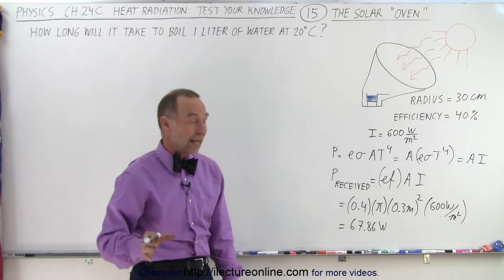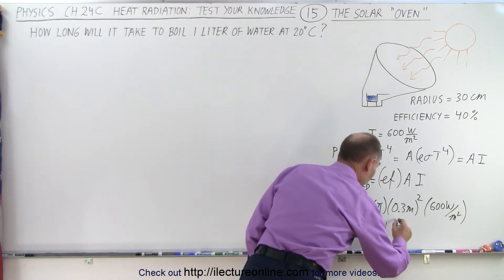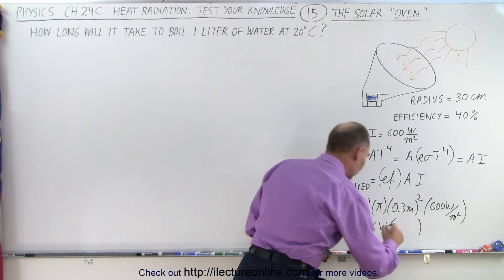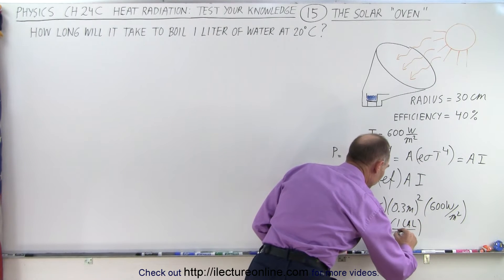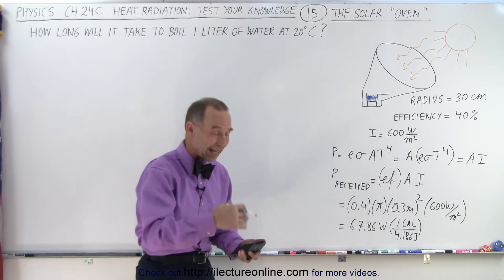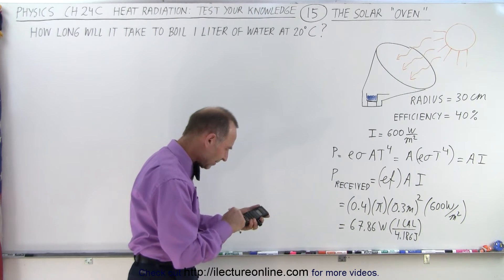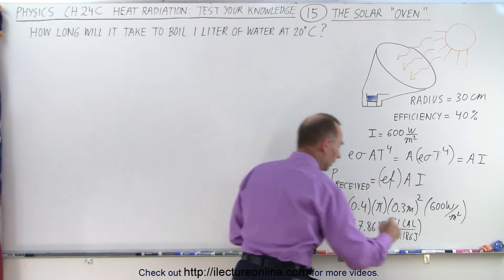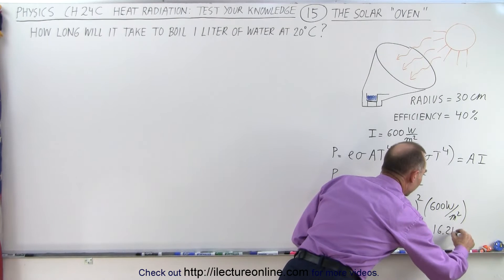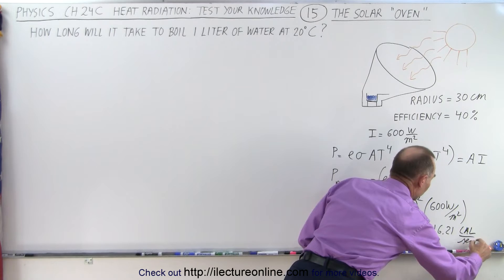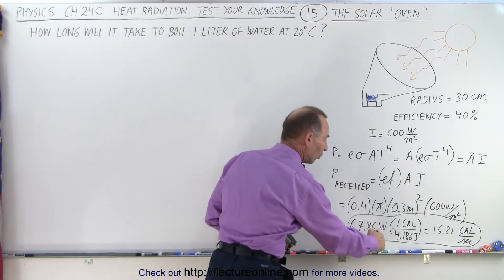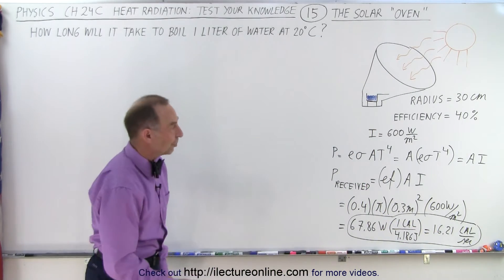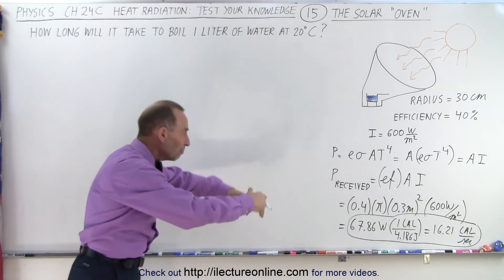Now let's convert it to calories because we want to convert that to how long it will take to heat the water. So the relationship is that we have one calorie to be equal to 4.186 joules. So remember that watts is joules per second, so this gives us calories per second. So divide by 4.186 and we get 16.21 calories per second. So we can use either one, 67.86 watts or 16.21 calories per second that we get from the sun, and that's input into the water.